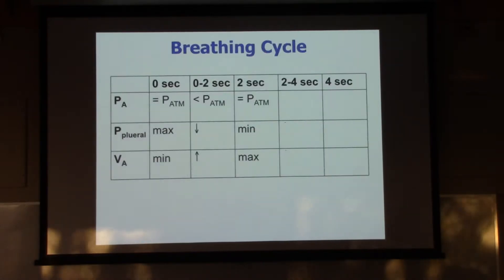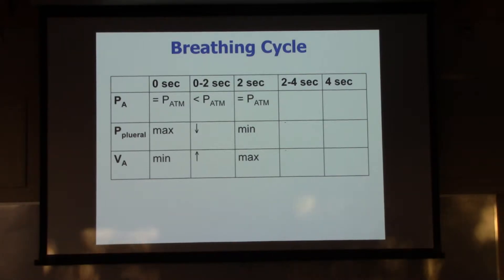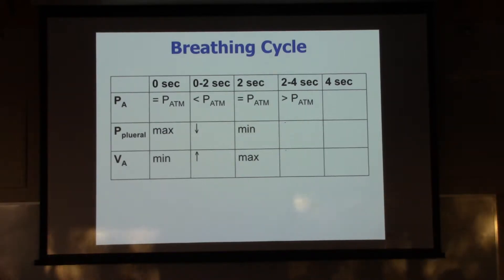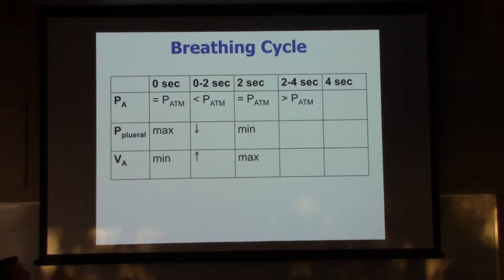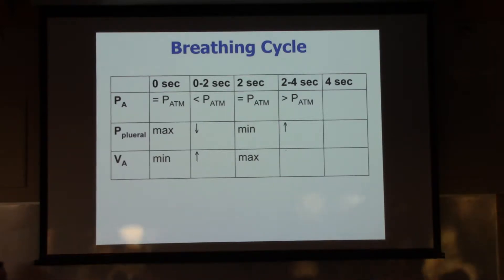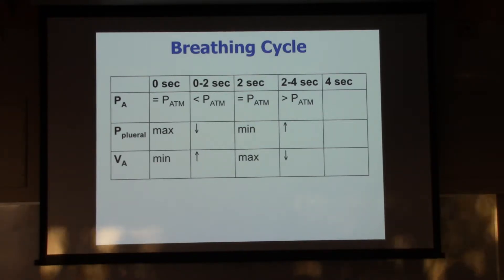We're ready to exhale. That's seconds two to four. So the pressure in the alveoli as we exhale has got to be greater than atmospheric pressure. If we're going to push air out, the pressure must be higher in the lungs than outside in the atmosphere. That interpleural pressure is going to come back up - it'll stay negative, but won't be as negative. And the volume of the alveoli is decreasing. We're exhaling, losing volume.